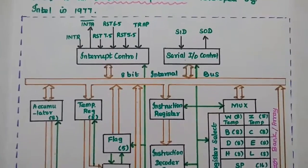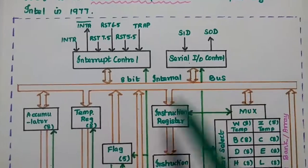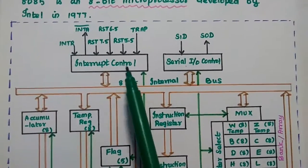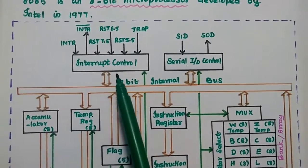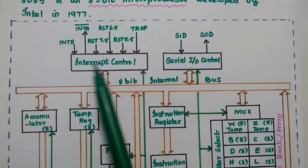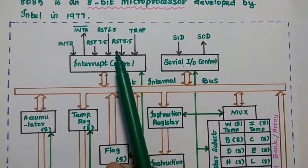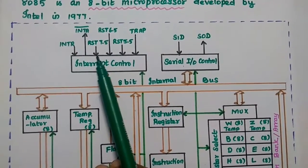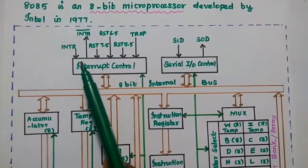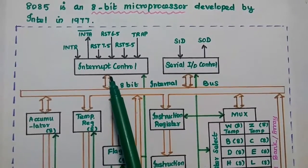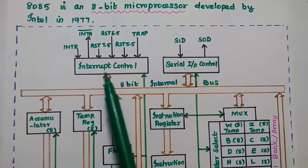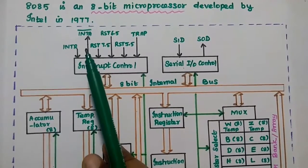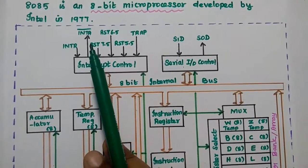Let's discuss each block in detail. The first one is interrupt control. The 8085 has 5 interrupts: Trap, RST 5.5, RST 6.5, RST 7.5, and INTA. There is one acknowledgement signal from this microprocessor, which is why we show the arrow mark going outside.